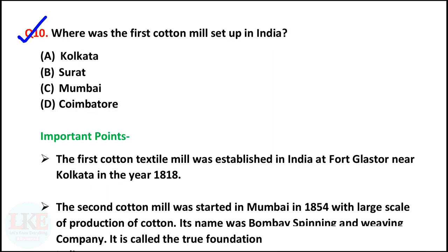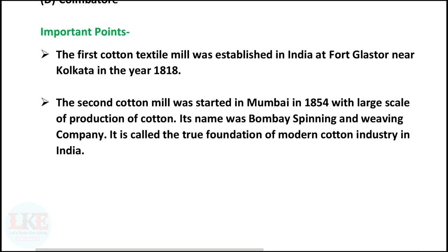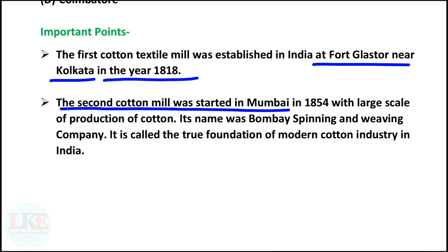Question number 10: where was the first cotton mill set up in India? Right answer option A: Kolkata. The first cotton textile mill was established in India at Fort Gloucester near Kolkata in the year 1818. The second cotton mill was started in Mumbai in 1854 with large-scale production — its name was Bombay Spinning and Weaving Company. It is called the true foundation of modern cotton industry in India.